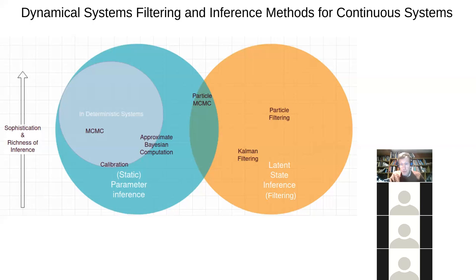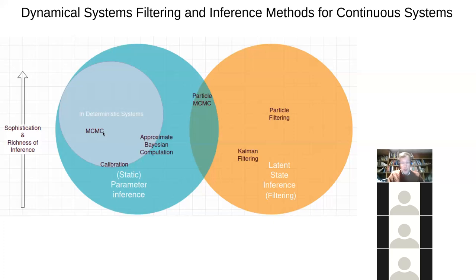Approximate Bayesian computation allowed us to dismount the high horse of assuming a privileged parameter vector and recognize that a huge number of different parameter vectors might be possible with different levels of plausibility. It did so in a particularly simple way — we didn't have to formulate likelihood functions. We could simply accept parameter vectors that yielded model outputs closely matching observed data within some epsilon. Then we moved to MCMC, which firms up those ideas and makes them more rigorous.